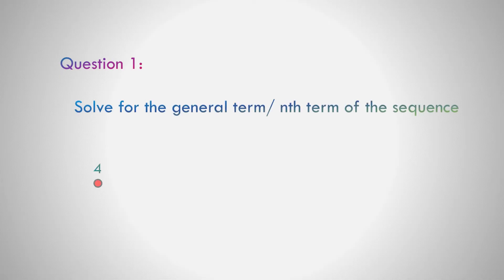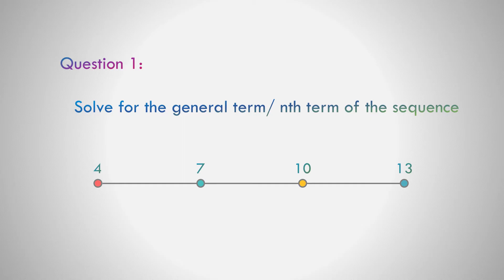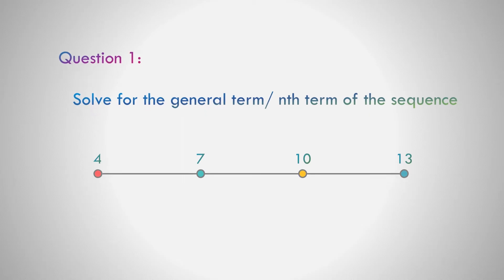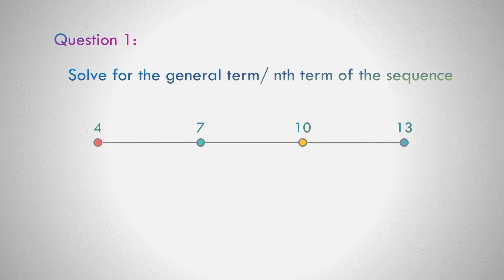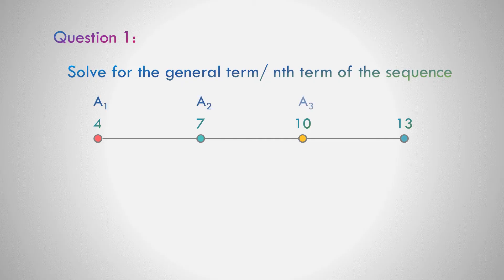Question number 1: Solve for the general term, or nth term, of the sequence 4, 7, 10, and 13. If the first term is 4, second term is 7, third term is 10, fourth term is 13 — what do you think is the number to be added? Correct, 3.